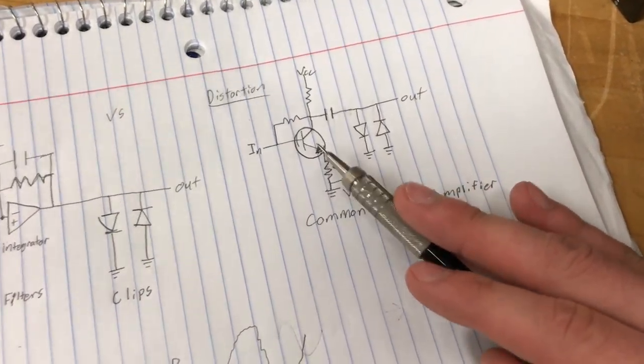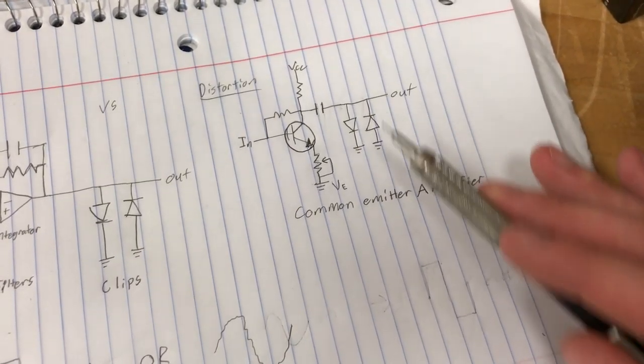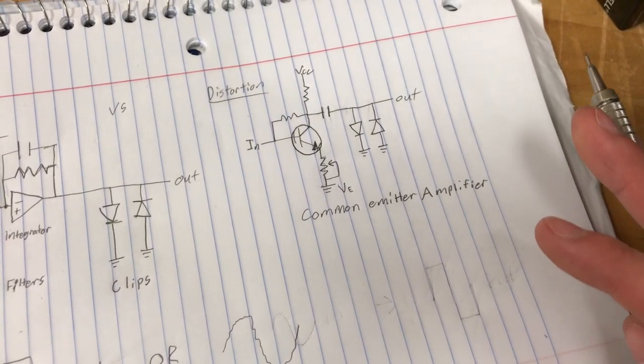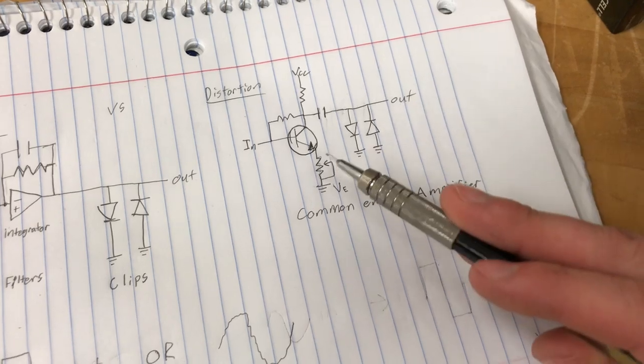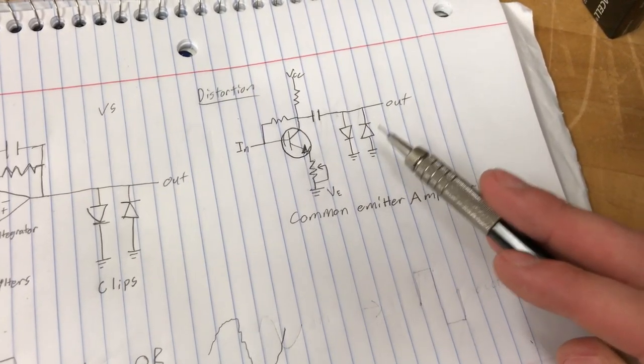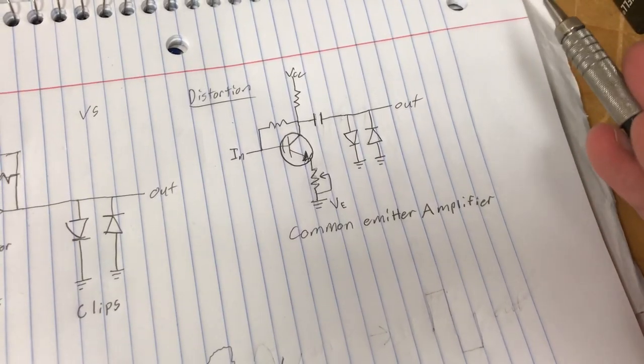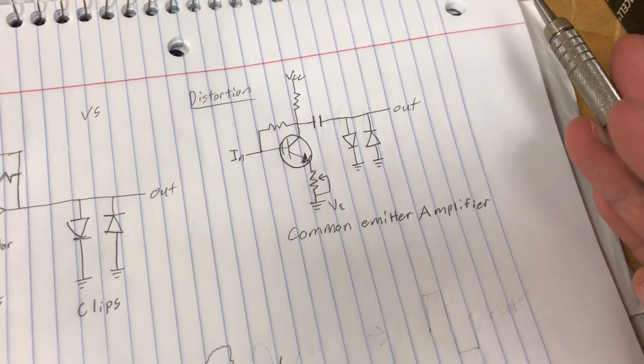For distortion, we have our transistor here in a common emitter amplifier circuit. We have another pot attached to VE which allows us to control the volume and distortion level.